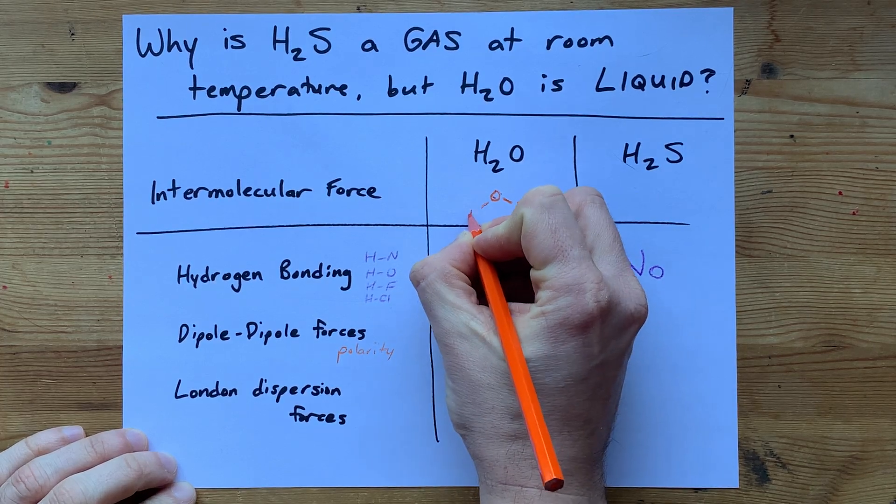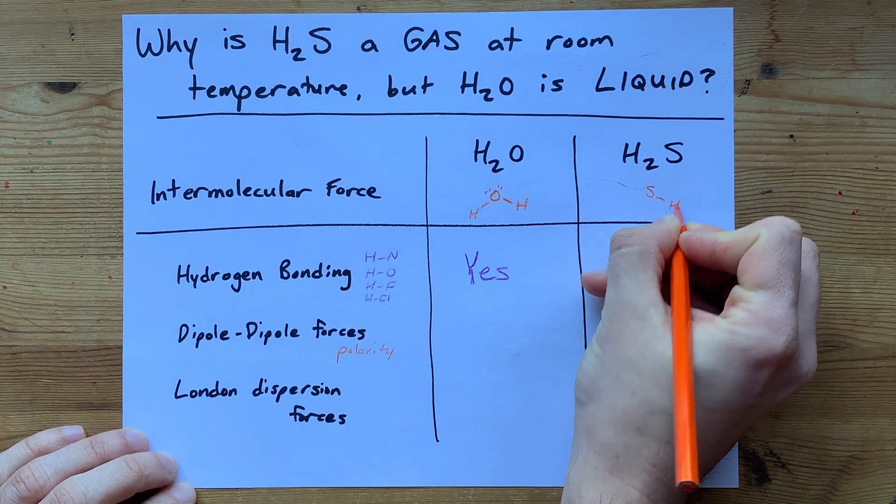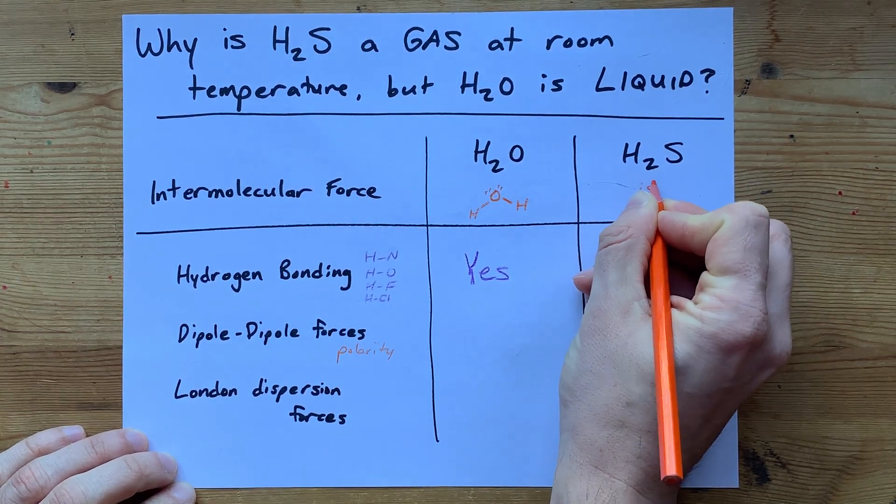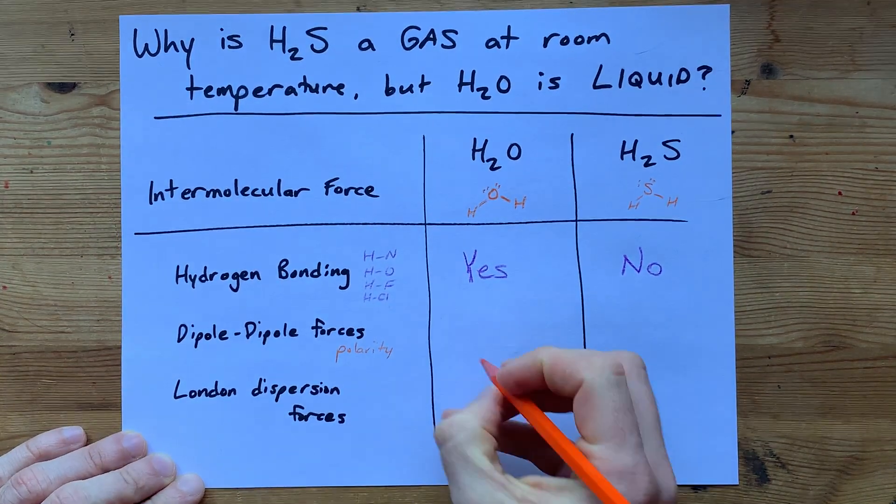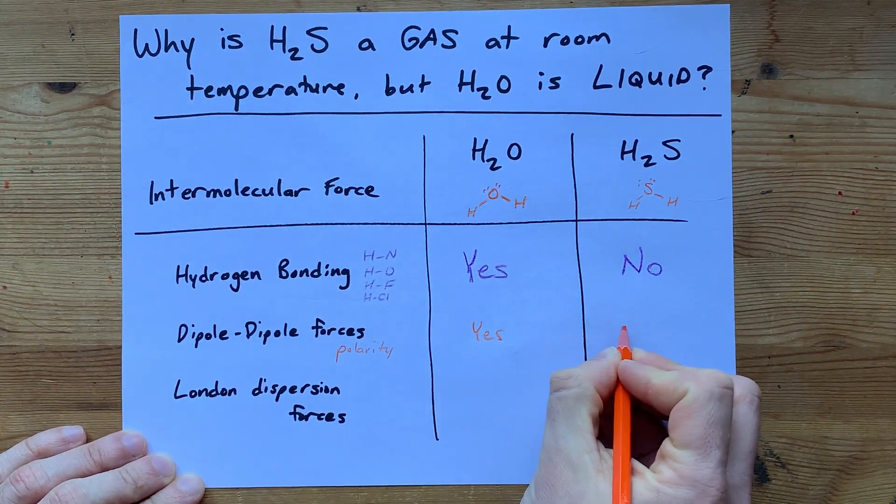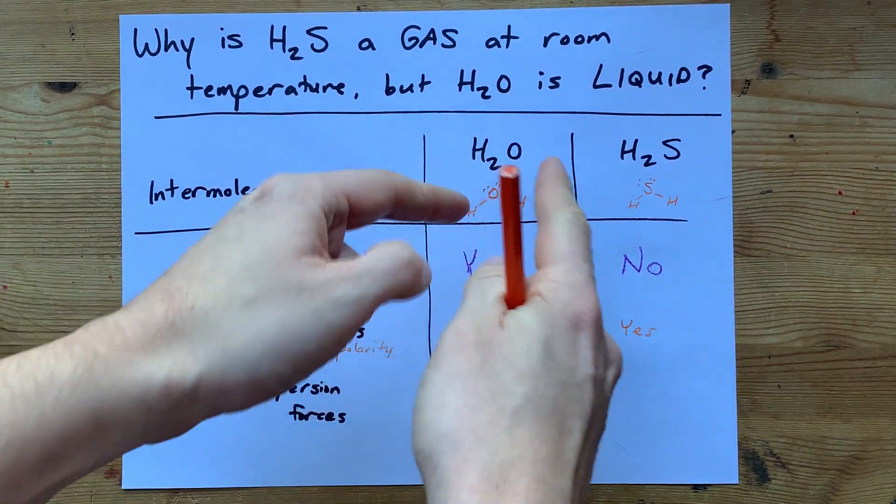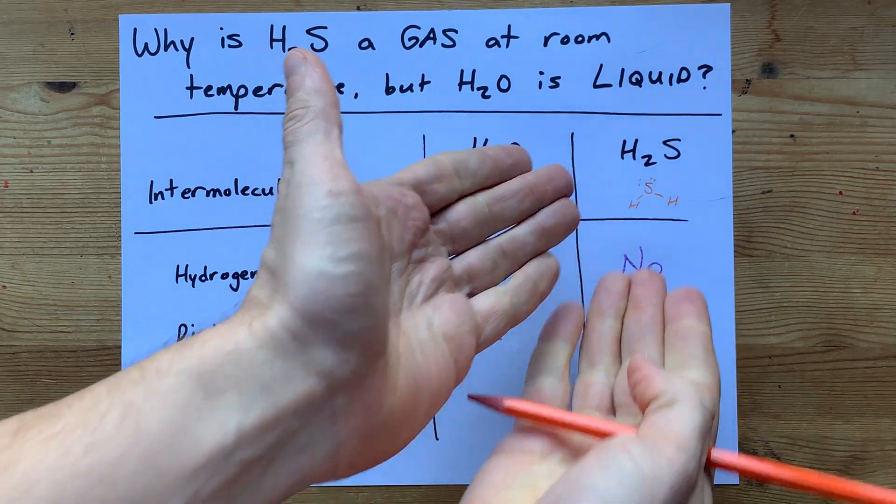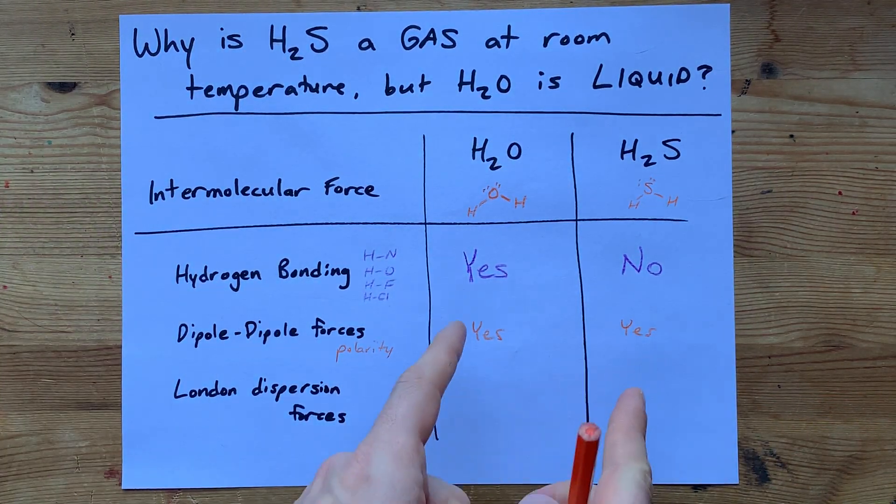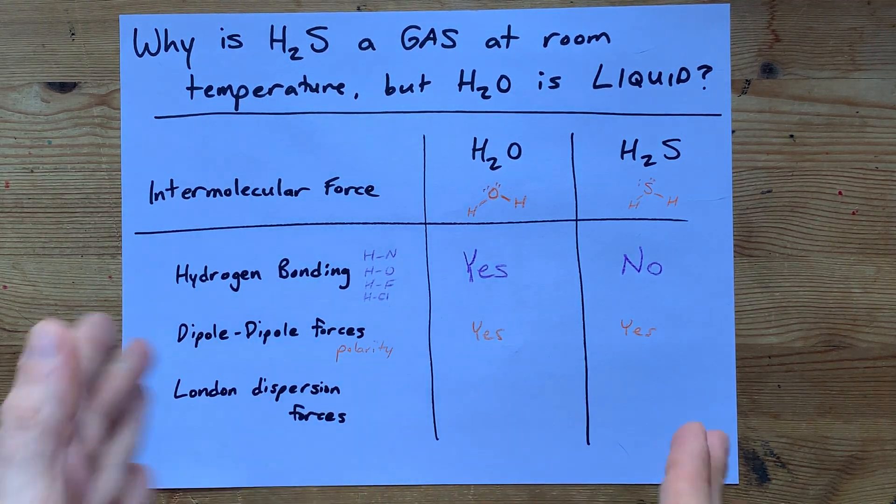The Lewis structure for both of these molecules is basically the same, but with a different central atom. The shape of the molecule plus the electronegativity differences mean that they actually both are polar. Water is slightly more polar because of the larger electronegativity difference, but this one is polar as well. So there's not a whole lot of distinction between the relative polarity of these two, if you ask me.